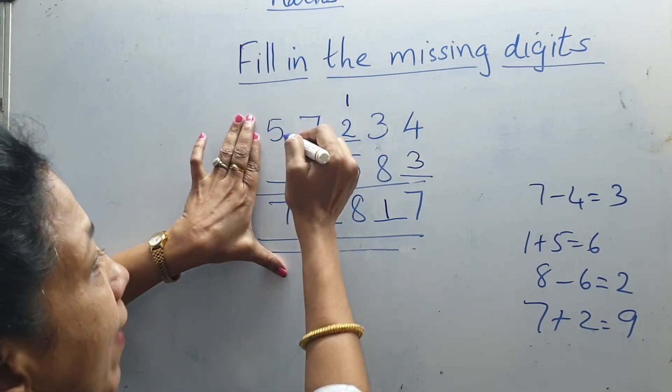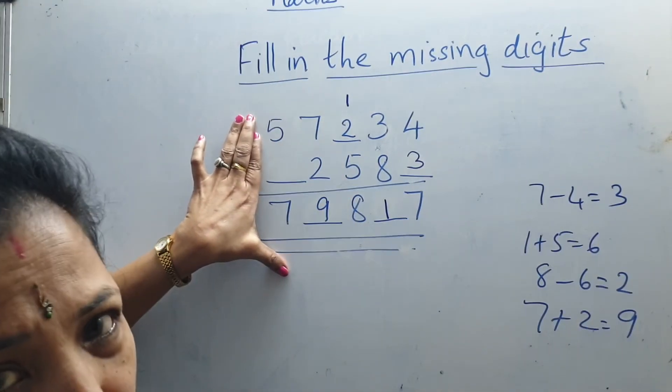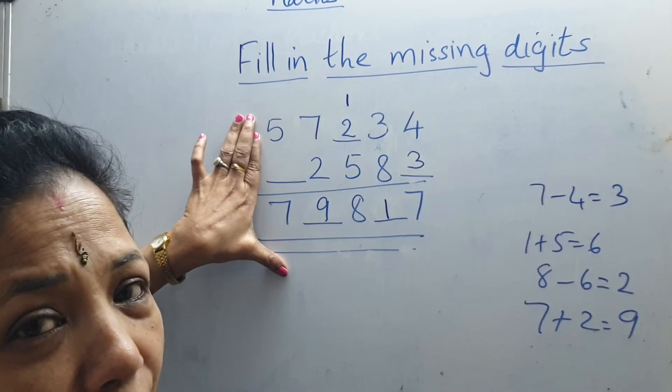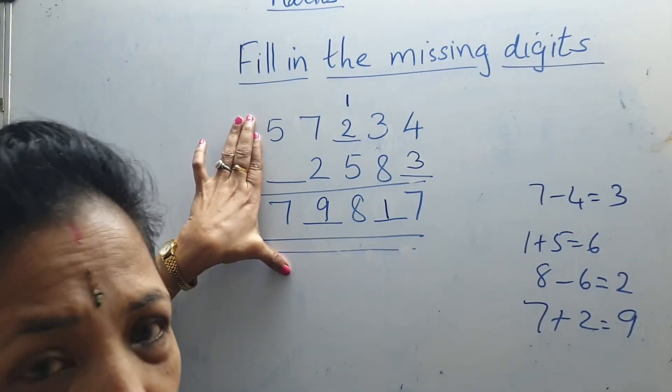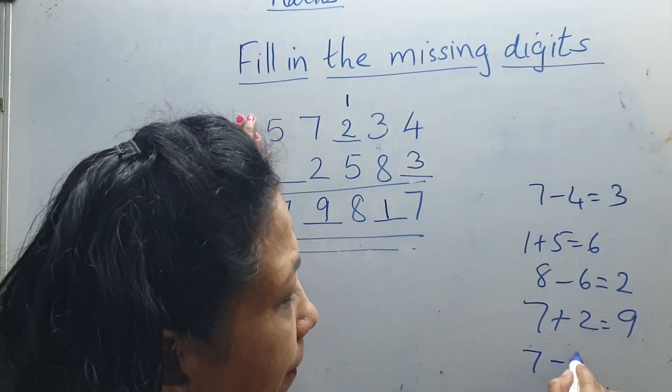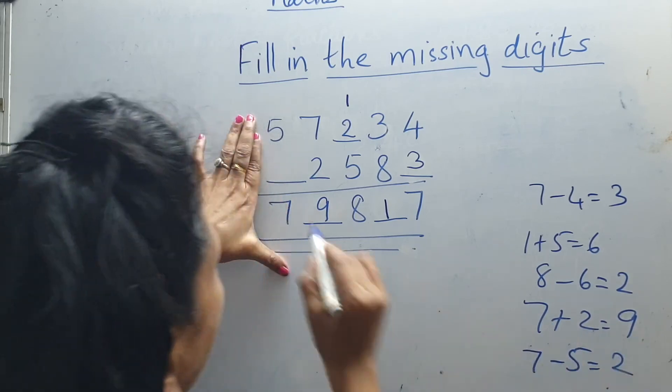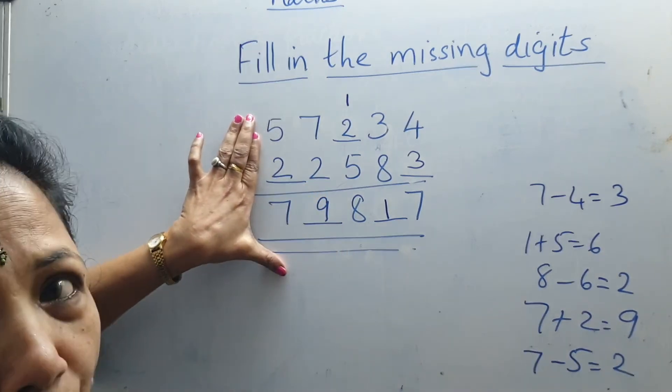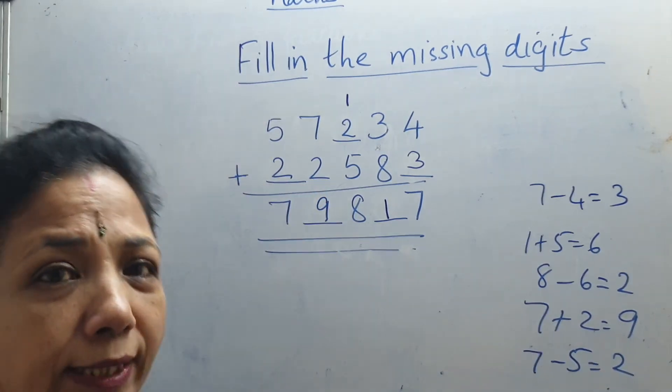Now next column. 5 plus _7. So we don't know which number we have to add with the 5. So 7 minus 5 is 2. So here will come 2. So 5 plus 2 is 7.